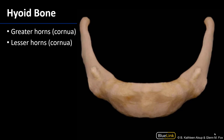There are two sets of horns or cornua to which various features attach. There are the lesser horns or cornua to which those stylohyoid ligaments attach.